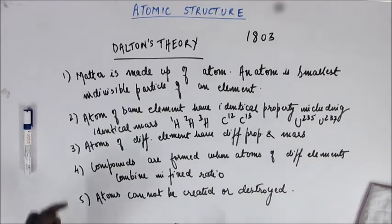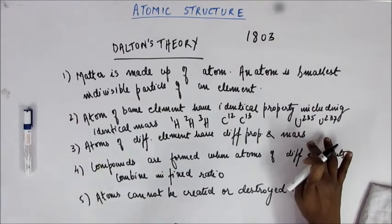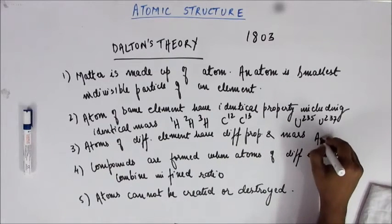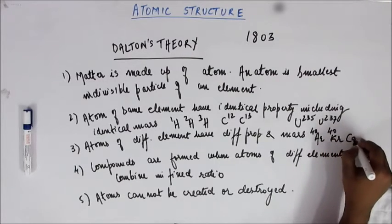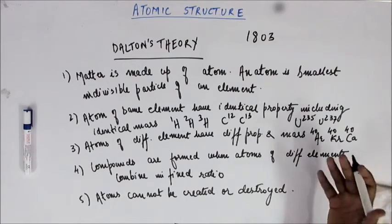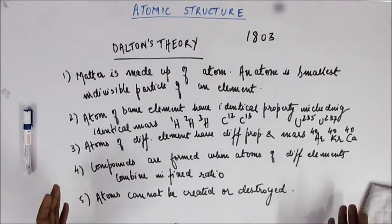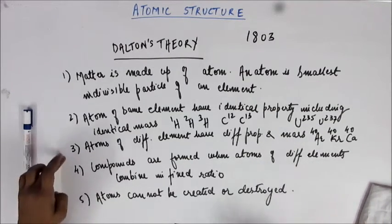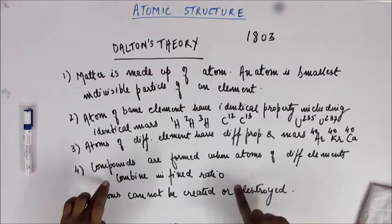'Atoms of different elements have different properties and mass' — this is also wrong. Atoms of different elements can have the same mass; they are called isobars. For example, argon-40, krypton-40, calcium-40, and even a sulfur isotope of atomic mass 40 are all atoms of different elements with the same atomic mass. So this statement is also wrong.